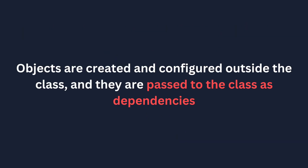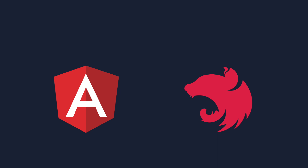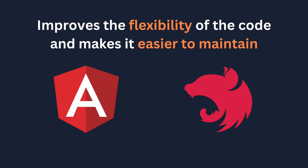Instead, the objects are created and configured outside the class and they are passed to the class as dependencies. Many popular frameworks such as Angular, NestJS, and Spring use Dependency Injection as a core principle. By using Dependency Injection, these frameworks make it easier to manage complex applications with a large number of dependencies.